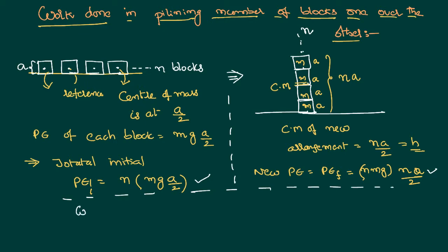So we can write work done as potential energy final minus potential energy initial. That is N Mg and N A by 2 minus N Mg A by 2. So if you take Mg A by 2 in common, it is N square minus N.